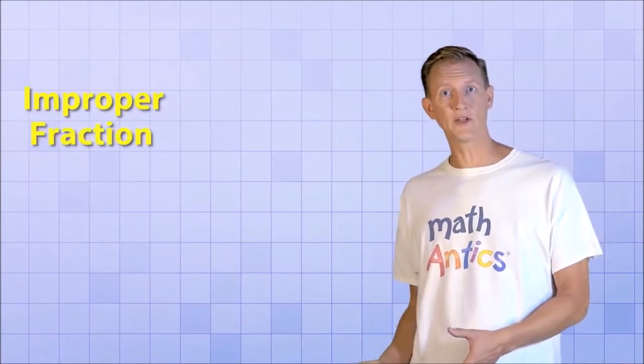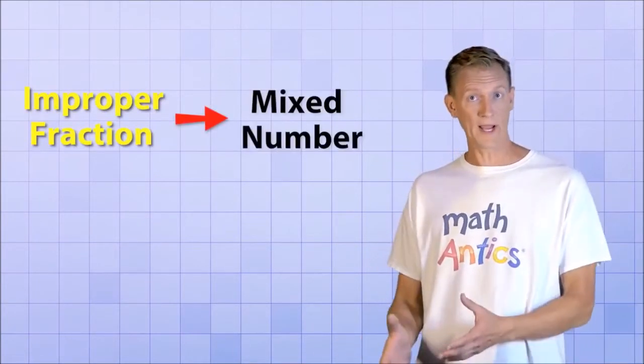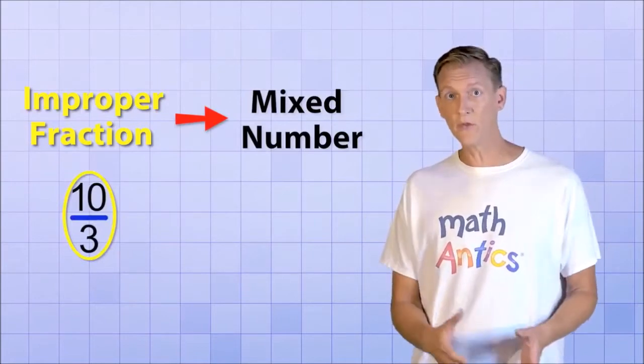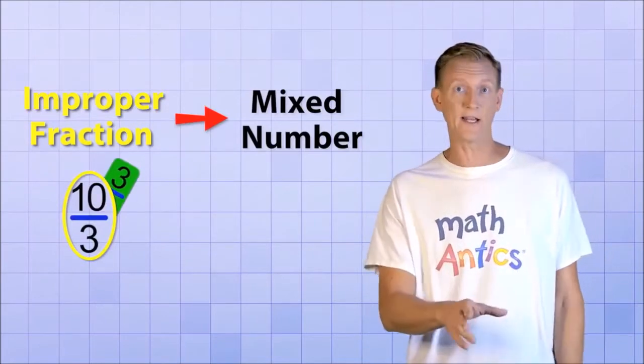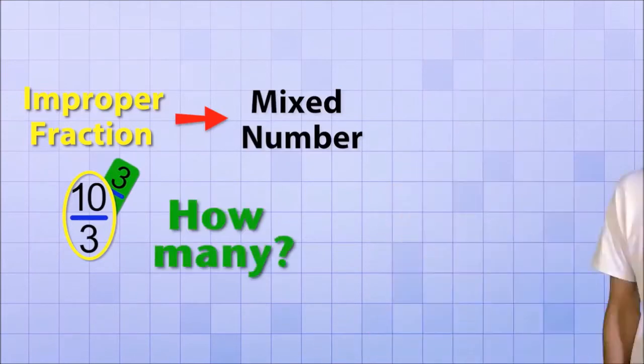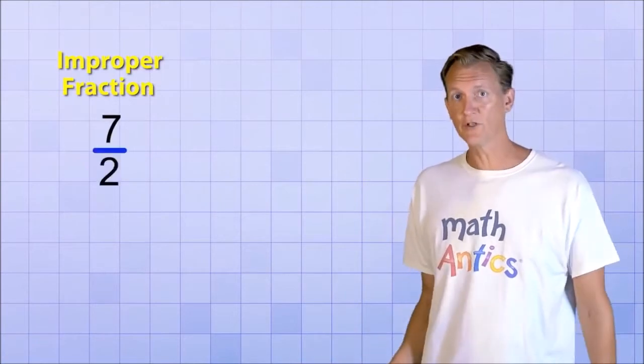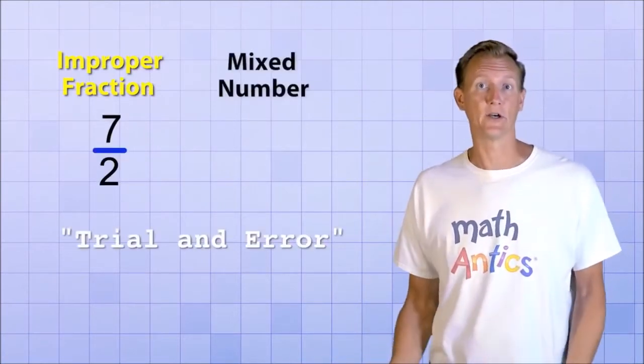What if we start with an improper fraction and need to convert it into a mixed number? Well, whenever we have an improper fraction, we know there's at least one whole fraction hiding in there that we could simplify out. The question is, how many? To see what I mean, let's try converting the improper fraction 7 over 2 into a mixed number using a little trial and error.